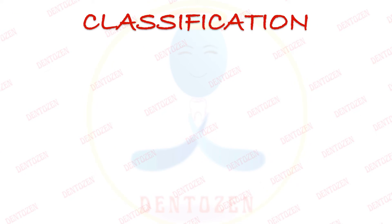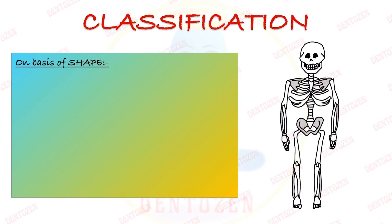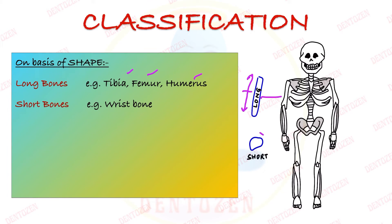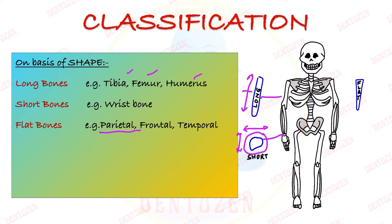How is bone classified? First, based on shape. Not all bones have the same shape. Long bones are those longer than their width, like the tibia, femur, and humerus. Short bones appear cuboidal — their length and width are almost the same, like wrist bones. Flat bones are thin and flat, like the parietal, frontal, temporal, sternum, scapula, and pelvis.